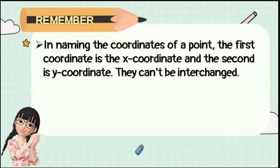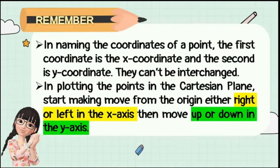Remember, in naming the coordinates of a point, the first coordinate is the x-coordinate and the second is the y-coordinate. They cannot be interchanged. In plotting the points in the Cartesian plane, start making moves from the origin, either right or left on the x-axis, then move up or down on the y-axis.